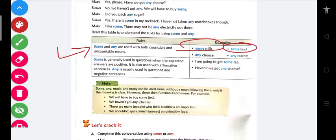Such as milk and boys. You cannot count milk - you cannot start counting one milk, two milk, three milk - so here 'some milk' is used in the conversation above. Some boys - yes we can count the boys. We can start counting them one, two, three, four and so on. Same is with any cheese - we cannot count the cheese, but we can count the teacher.